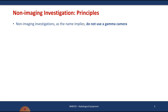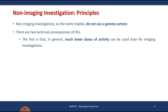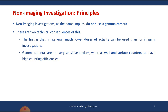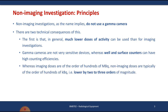As stated, non-imaging techniques don't use a gamma camera. The first reason to use these techniques is that they involve much lower doses of activity compared to the gamma camera, where radioisotopes emit higher levels of gamma radiation. Additionally, we use well and surface counters which have very high sensitivity and high counting efficiency.